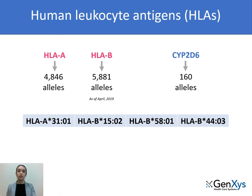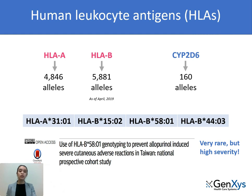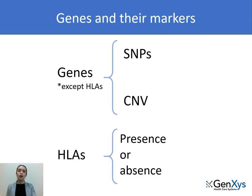HLA-A 3101, HLA-B 1502, HLA-B 5801, and HLA-B 4403. The presence of these alleles is very rare. However, the adverse drug reactions that are related to them can be quite severe. By testing for SNPs, CMVs, and HLAs, we are able to provide a comprehensive view of the genetic changes that affect drug response. We hope this video gave you a better picture of the Genetsis pharmacogenetic test and how it works.